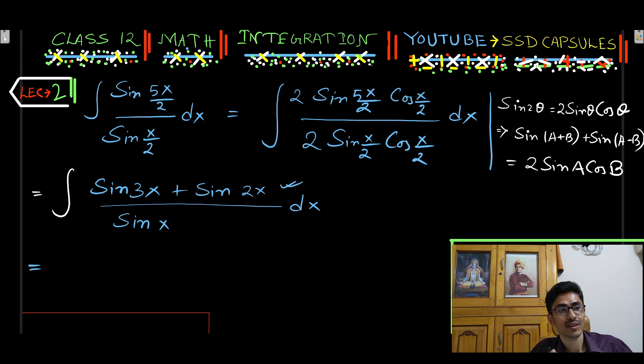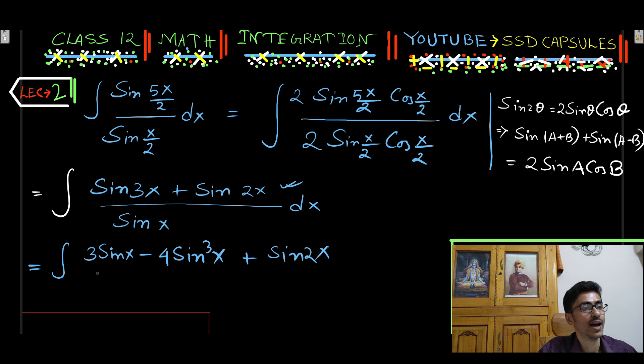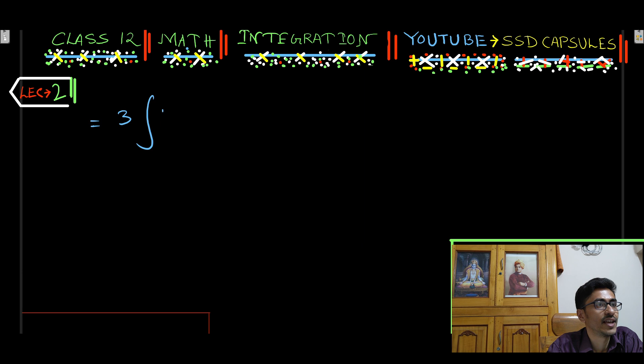Now we use the formula of sine 3 theta. Sine 3x means 3 sine x minus 4 sine cube x plus sine 2x by sine x dx. So 3 sine x by sine x, next page, is 1, so dx.